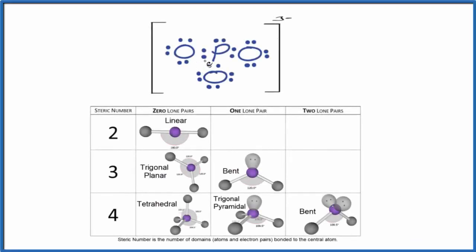In this video, we'll take a look at the molecular geometry for PO3 3-. This is the phosphite anion. So we have our Lewis structure here. If you need help drawing that, there's a link in the description. And then we have this table here that'll help us look at the molecular geometry for PO3 3-.